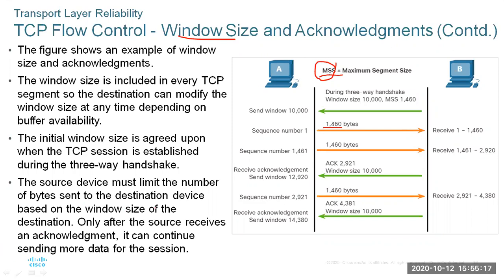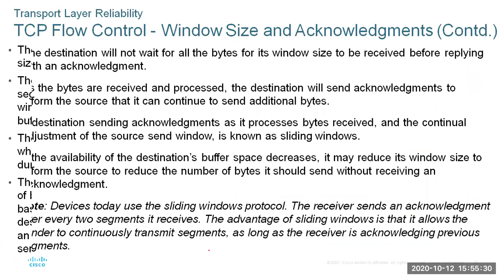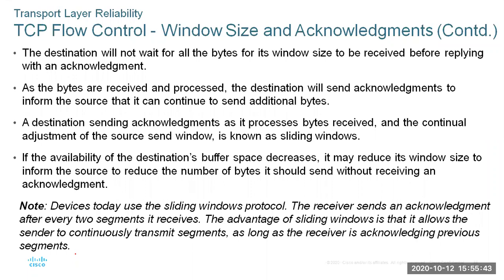The source device must limit the number of bytes sent to the destination based on the window size. The destination only allows the source to continue sending more data after the source receives an acknowledgement. The destination will not wait for all bytes of its window size to be received before sending an acknowledgement — as bytes are received and processed, it sends acknowledgements to inform the source to continue. The continual adjustment of the source send window is known as the sliding window.